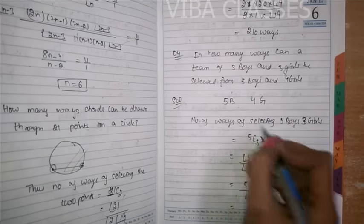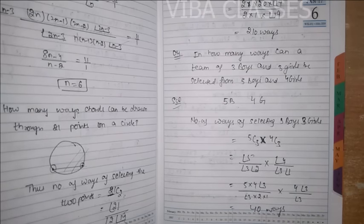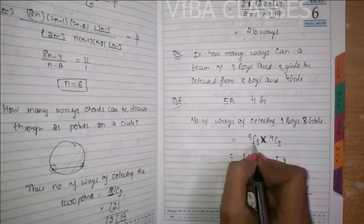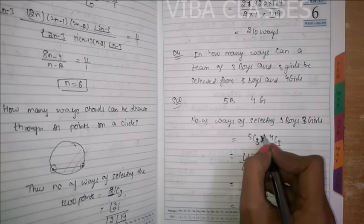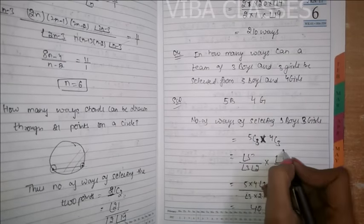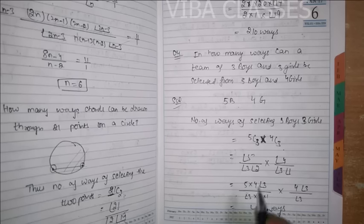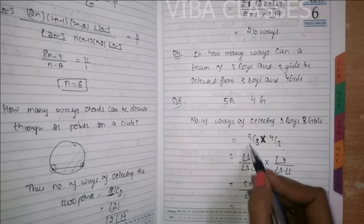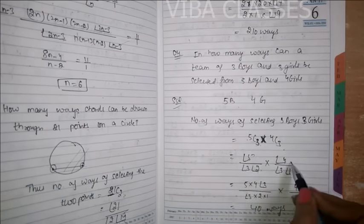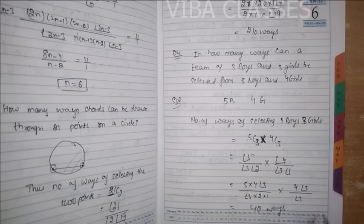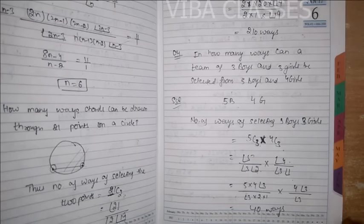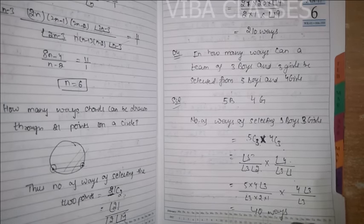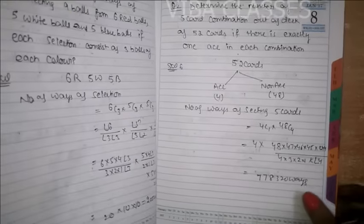You need both boys and girls. So you write 5C3 for boys and 4C3 for girls. Opening the combination formula: factorial n divided by factorial r into factorial (n minus r), similarly for 4C3. If you solve this, you get 40 ways to select 3 boys and 3 girls.